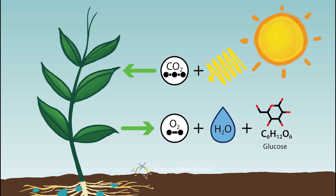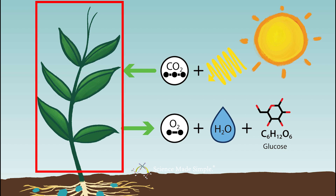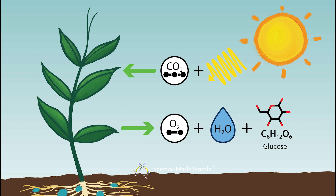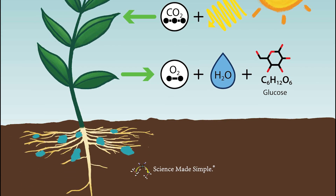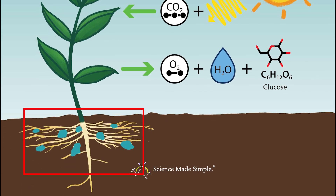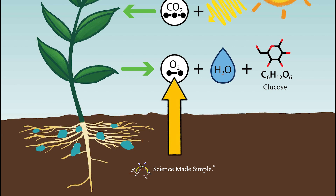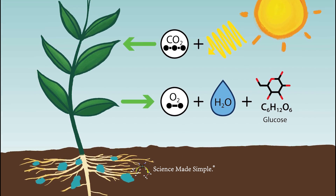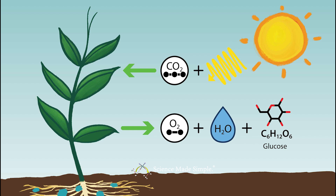Photosynthesis is the process by which plants, like trees, turn sunlight into food. This process occurs in plants when light is absorbed by chlorophyll in the leaves. Water absorbed through the roots of the plant is then broken down, producing oxygen that is released through the leaves. The breaking down of water also starts the process through which sugar is produced within the plant — sugar the plant uses as food.